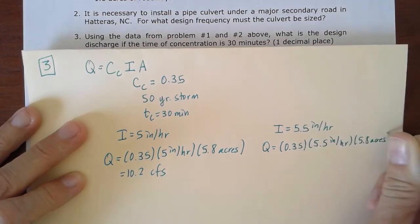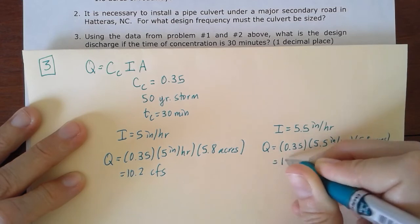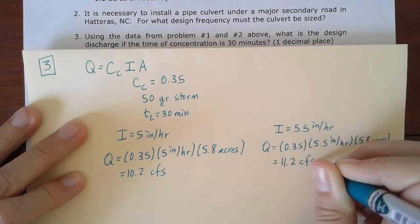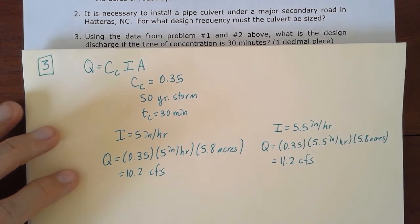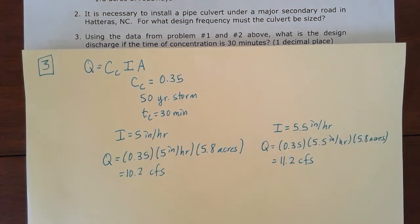Which gives us a flow discharge of 11.2 cubic feet per second. So somewhere in that ballpark for that answer, depending on what you picked for I off of that chart.